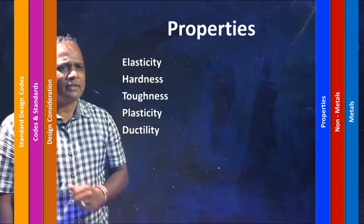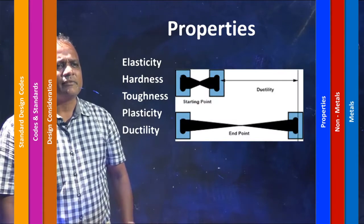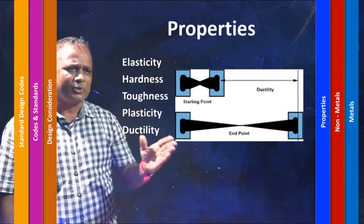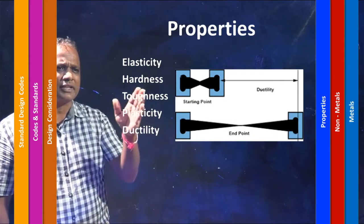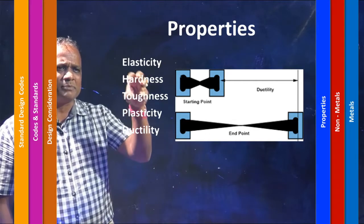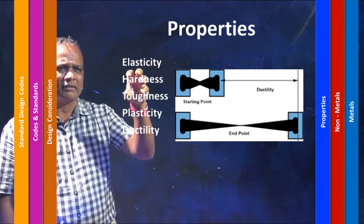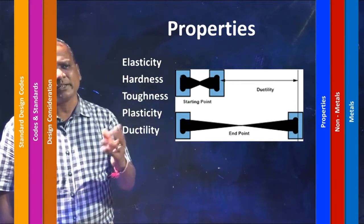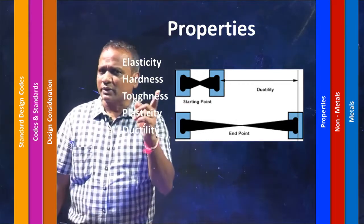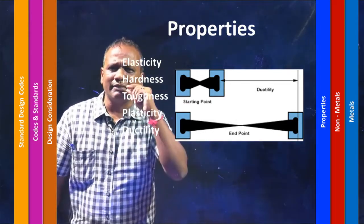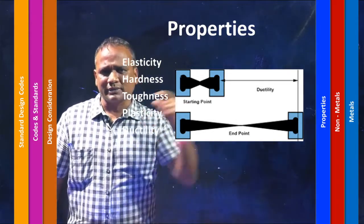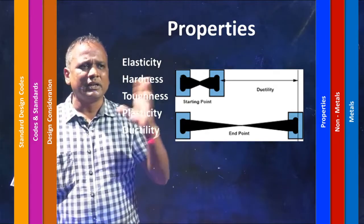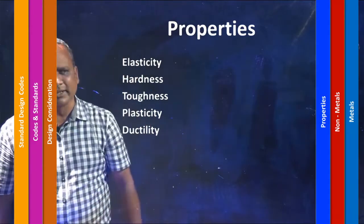Next would be ductility — the ability of a material to be drawn into a thin wire. As you can see, the material is fixed between two jaws and when given a pull, it turns out to be a thin wire. That ability of drawing the whole material into a thin wire is ductility.